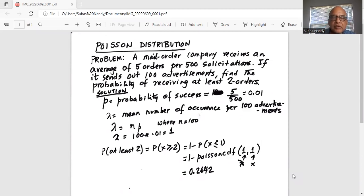That means the discrete random variable here is number of orders, and it is at least 2. That means 2 or greater. First, we have to find out small p, which is probability of success. Remember, it receives an average of 5 orders per 500 solicitations. So that is equal to 5 divided by 500. So probability of success is 0.01.